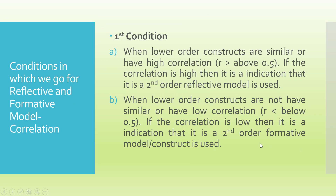Now in which conditions should we go for the higher order? First condition: when the lower order constructs are similar or have high correlation. If the correlation is high, it is an indication of a second order reflective model. Second: when the lower order constructs are not similar or have low correlation. If the correlation is low, it is an indication that a second order formative model or construct should be used.